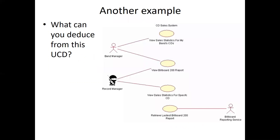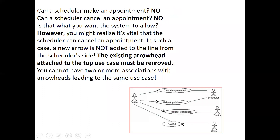Here's another example. Because there are no arrows at the end of the associations, it indicates that data is flowing both ways. The band manager can use the CD sales system, but it doesn't indicate who initiated it — it just means that the band manager can do these things. Can the scheduler make an appointment? According to this diagram, the answer is clearly no. Can a scheduler cancel an appointment? No — the scheduler simply responds in this particular case.